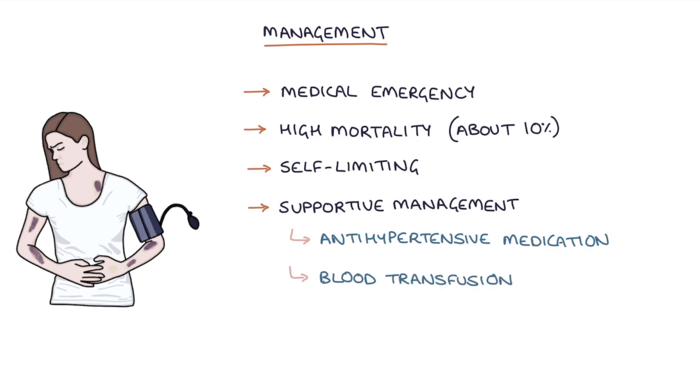Blood transfusions if required to treat the hemolytic anemia, and hemodialysis if there's a severe acute kidney injury. Around 70-80% of patients who develop hemolytic uremic syndrome will make a complete recovery.